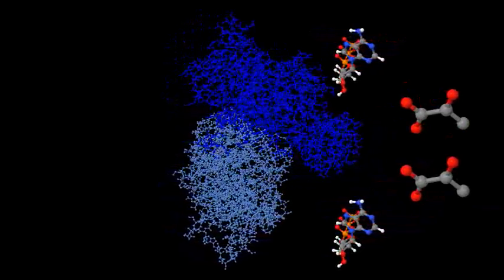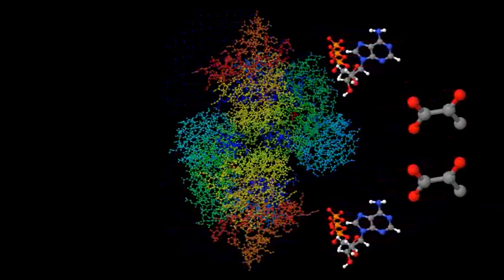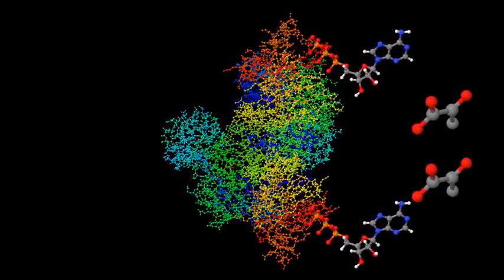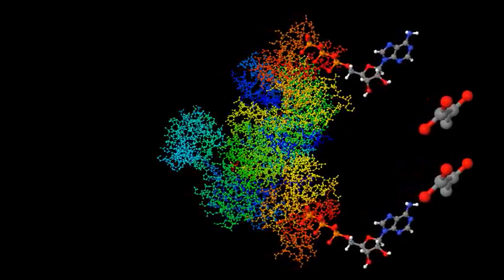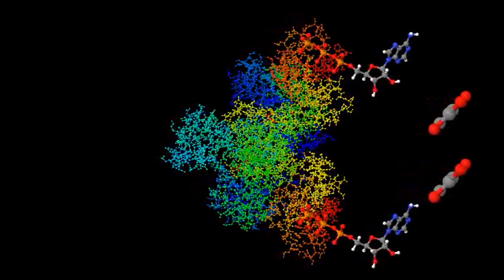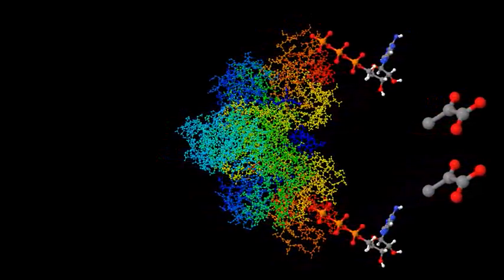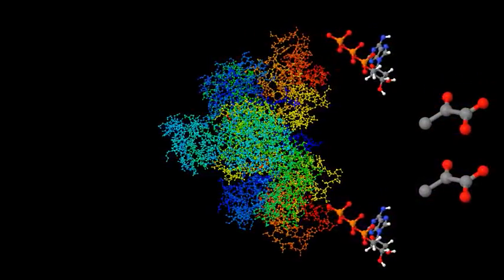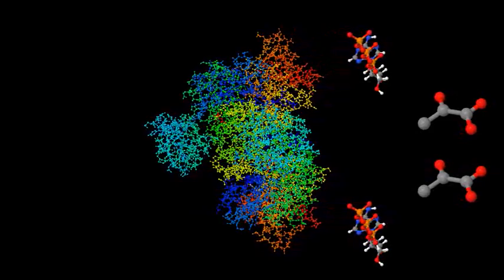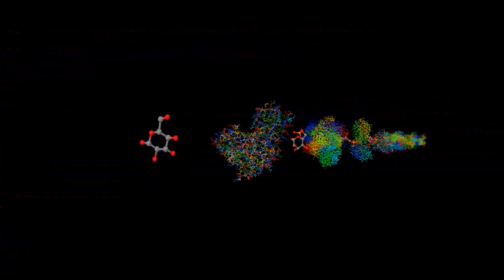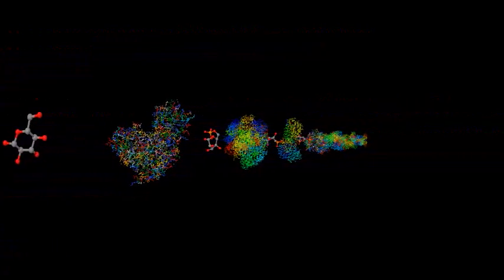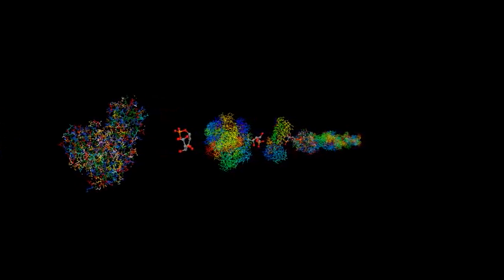These pyruvates leave glycolysis and are subsequently burned up completely into carbon dioxide and water, or converted into throwaway molecules like alcohol or lactic acid. Here is a visual review of the 10 enzymes and the intermediate molecules they produce.